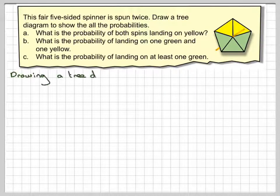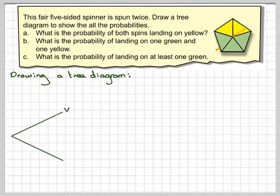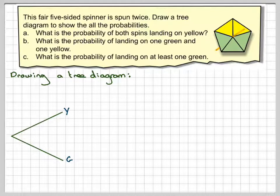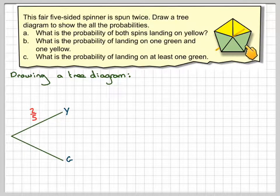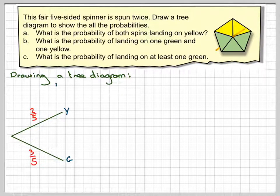So drawing the tree diagram. If I spin it once, I can get a yellow or a green. The chance of getting yellow is two fifths, and the chance of getting a green is three fifths. So this would be the first spin.